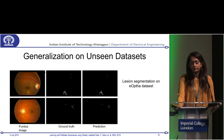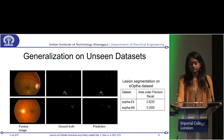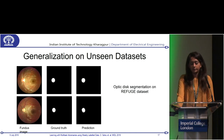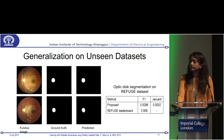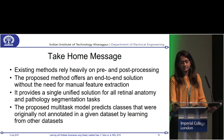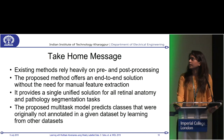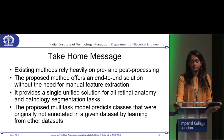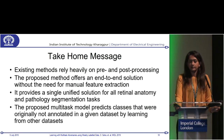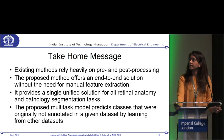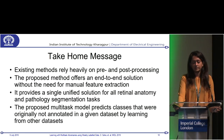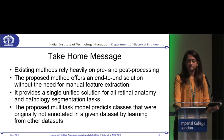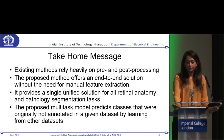We also tested on hard exudates — high-intensity pixels — on the eOptha dataset, and on the optic disc from the Refuge challenge dataset, comparing with the Refuge leaderboard. The take-home message is that existing methods rely heavily on pre- and post-processing, and no previous technique has provided an end-to-end solution without manual feature extraction. Our method provides a single solution for all anatomy and pathology segmentation, and our multitask model predicts classes that were originally not annotated in a given dataset by learning from other datasets.